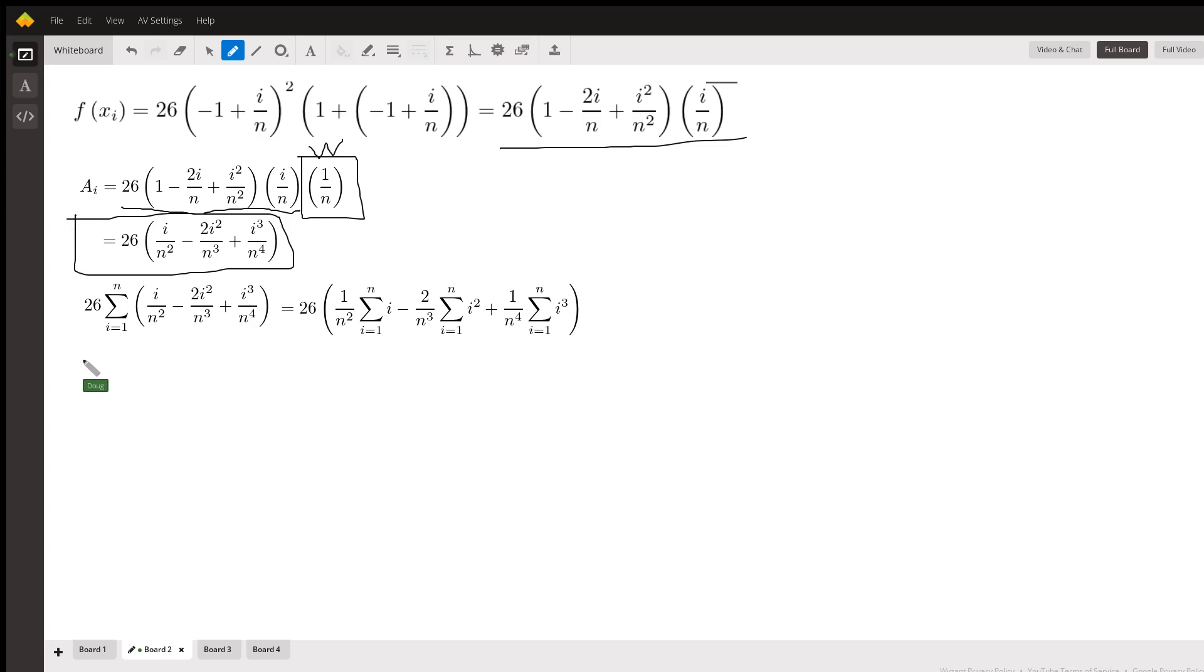Now what we want to do is sum up those areas from i equals 1 to n. There is the 26 times the sum from i equals 1 to n of this expression. We can break that apart using summation theorems. Remember n is just a constant, so I can pull that constant out front from this term, and I've got the sum from i equals 1 to n of i.